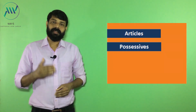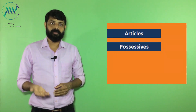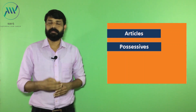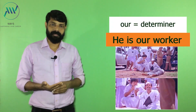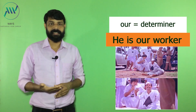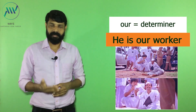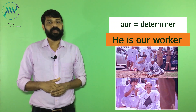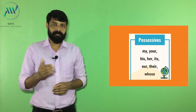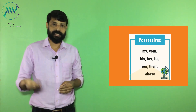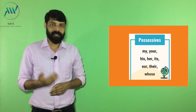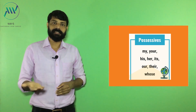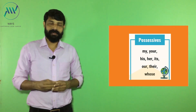Possessive. Possessive determinants are used to claim some sort of ownership. For example, 'He is our worker.' In this example, the word 'our' is a determiner — here it is used to show some kind of ownership. Not only this word, we have some more examples for possessive determinants like his, her, and your. All these are examples for possessive determinants.